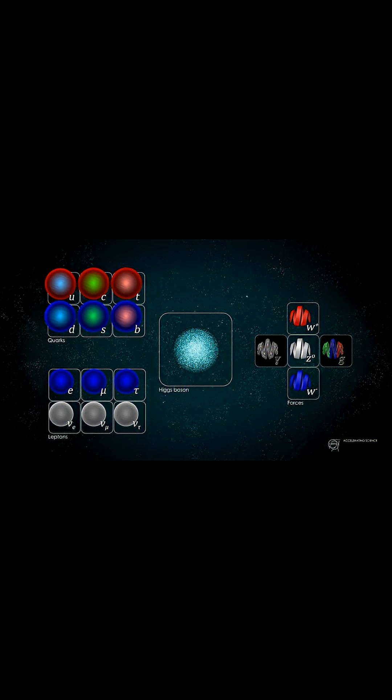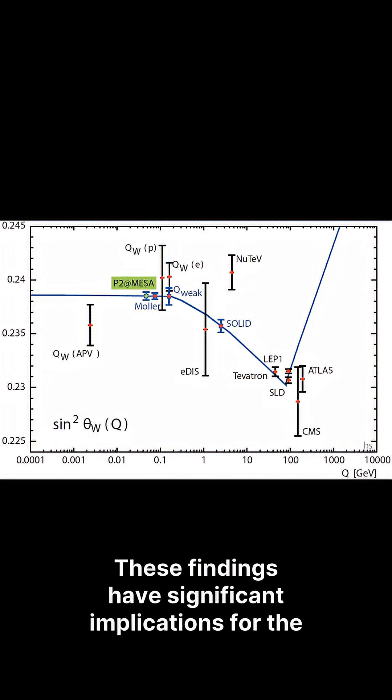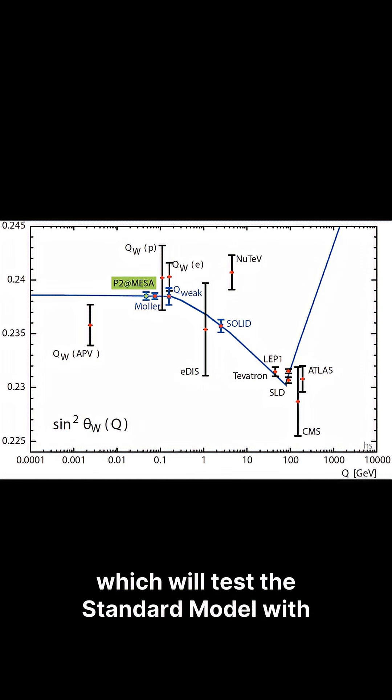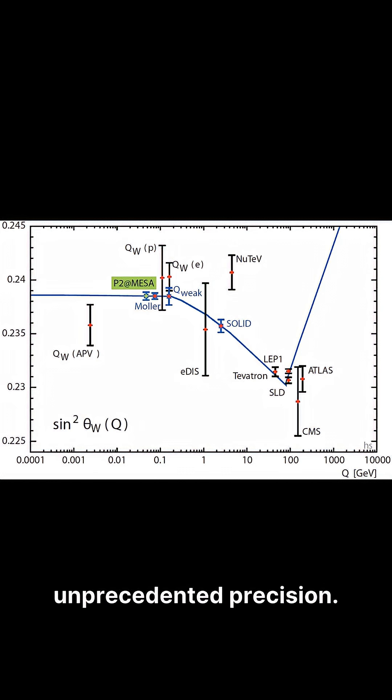What's going on inside lead? Is this a crack in the standard model or the start of a new chapter in physics? These findings have significant implications for the upcoming P2 experiment at the Maser Accelerator, which will test the standard model with unprecedented precision.